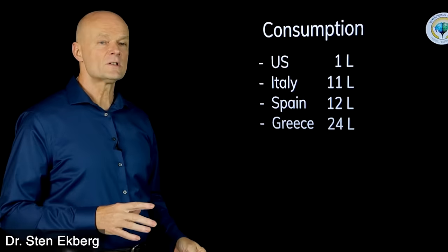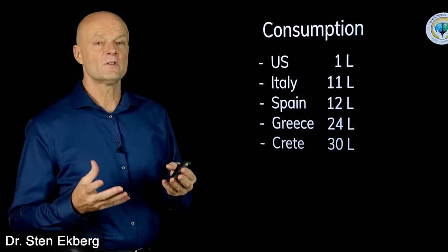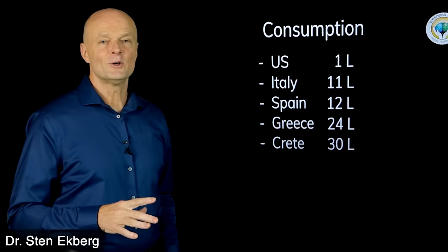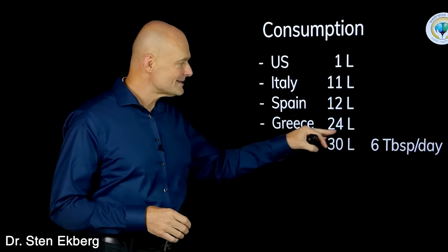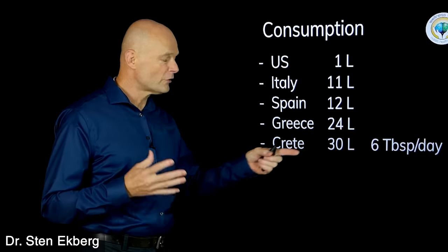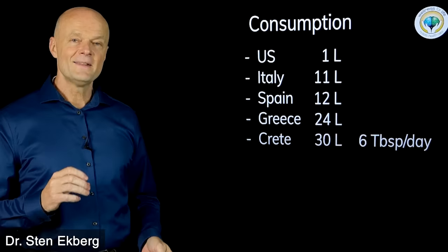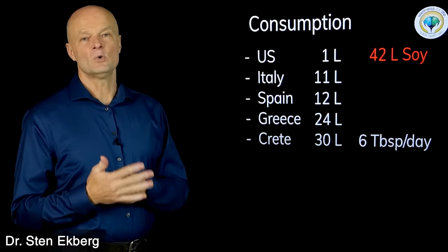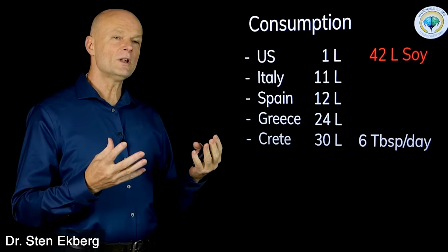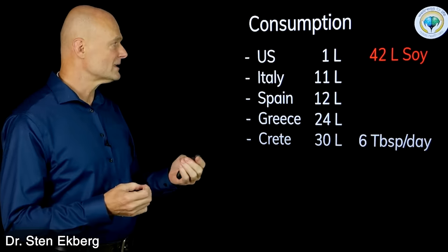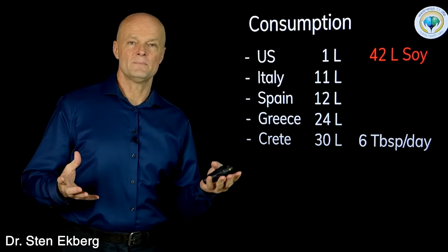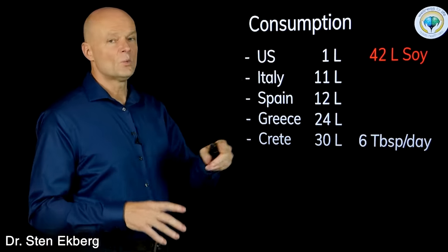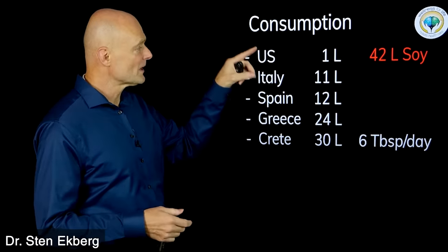Obviously these are all Mediterranean countries. In Greece they consume 24 liters, and in Crete, which has been called the origin of the Mediterranean diet, they eat 30 liters of olive oil every year per person. That's about six tablespoons per day - up to a third of the calories consumed in the entire country. By contrast, in the United States we consume 42 liters of soybean oil. In a country where we're always told how great the Mediterranean diet is and how great olive oil is, we basically don't consume any. Is there any wonder where in Crete they have some of the lowest rates of heart disease anywhere, and obviously in the U.S. we have some of the highest rates?